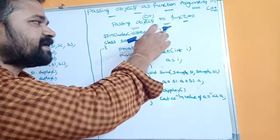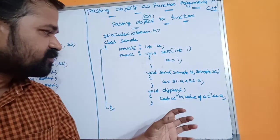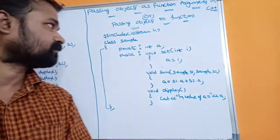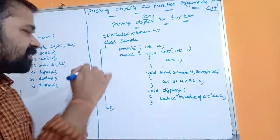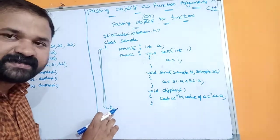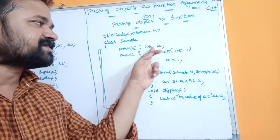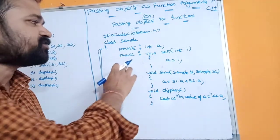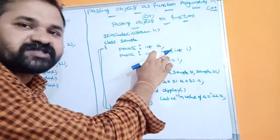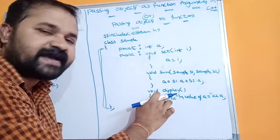We have the iostream.h header file because in this program we are using the cout object, which is present in iostream.h. Next we have class sample — this is our class declaration. We know that in C++ the class declaration ends with a semicolon. Under the private section we have a variable called a, and under the public section we have defined three functions.